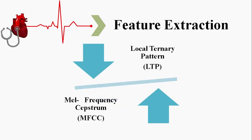We performed many trials using different combinations of multiple features and scored the best accuracy using MFCC and LBP. We initially used 69 features but finalized MFCC for the best accuracy. In signal processing, the Mel Frequency Cepstrum is a representation of the short-term power spectrum of a sound, based on a linear cosine transform of a log power spectrum. The MFCC feature extraction technique includes windowing the signal, applying the DFT, taking the log of the magnitude, wrapping the frequency on a Mel scale, and applying the inverse DCT.